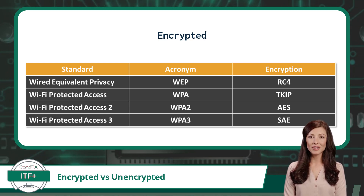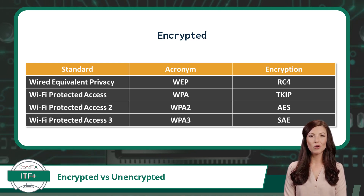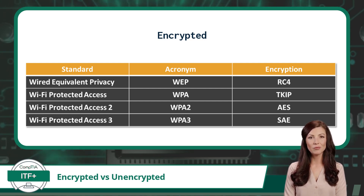One last note about these encryption standards: just because your wireless network device supports a specific encryption standard does not mean the wireless clients do. It is very common that an older wireless client, such as a laptop, smartphone, or even a wireless IoT device like an oven, refrigerator, or light switch, may not support some of the newer encryption standards. If this happens, the client may not be able to connect to the network. Just some food for thought.